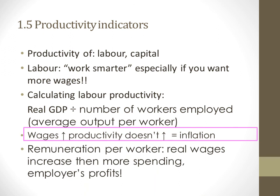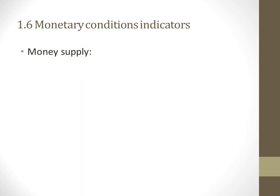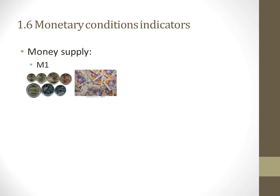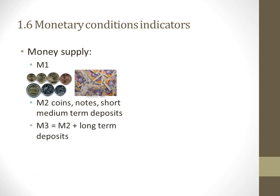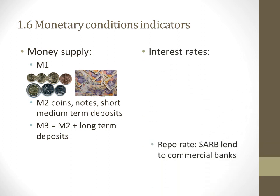Remuneration per worker: real wages should not increase more than spending on products. For monetary condition indicators, the money supply is broken into: M1 — coins and notes; M2 — coins, notes plus short and medium-term deposits; and M3 — M2 plus long-term deposits.